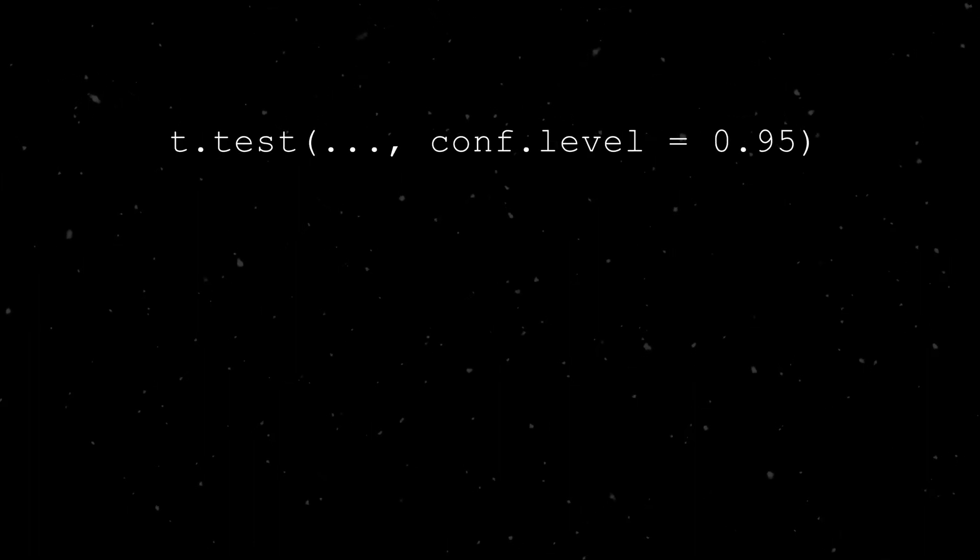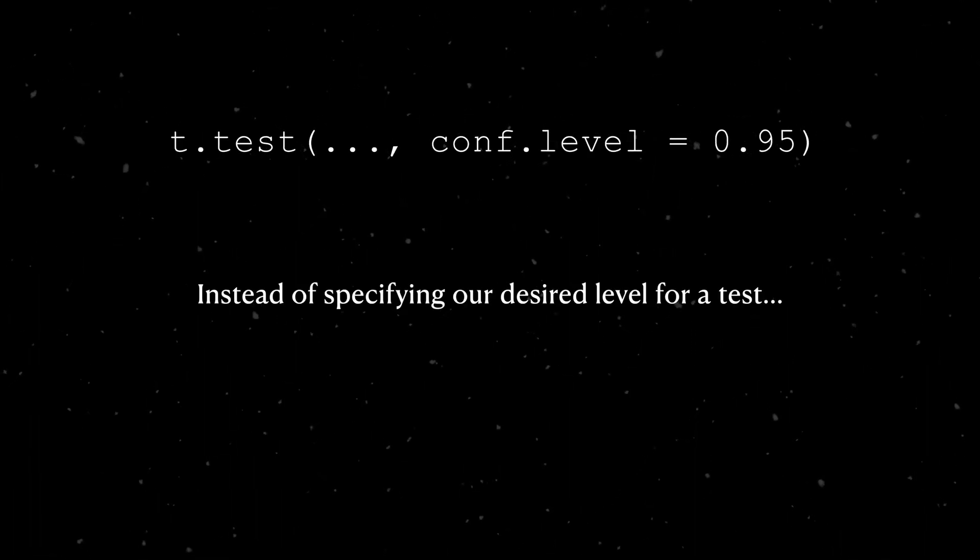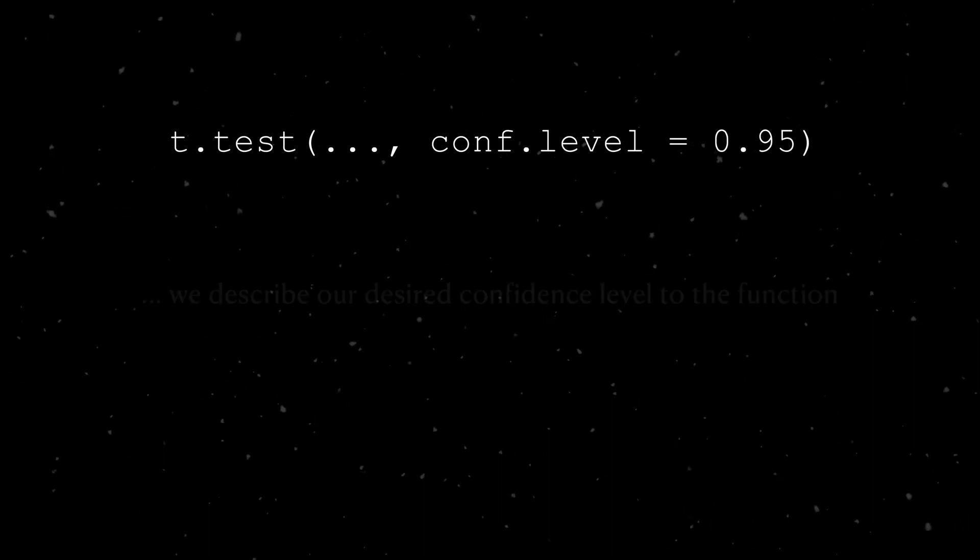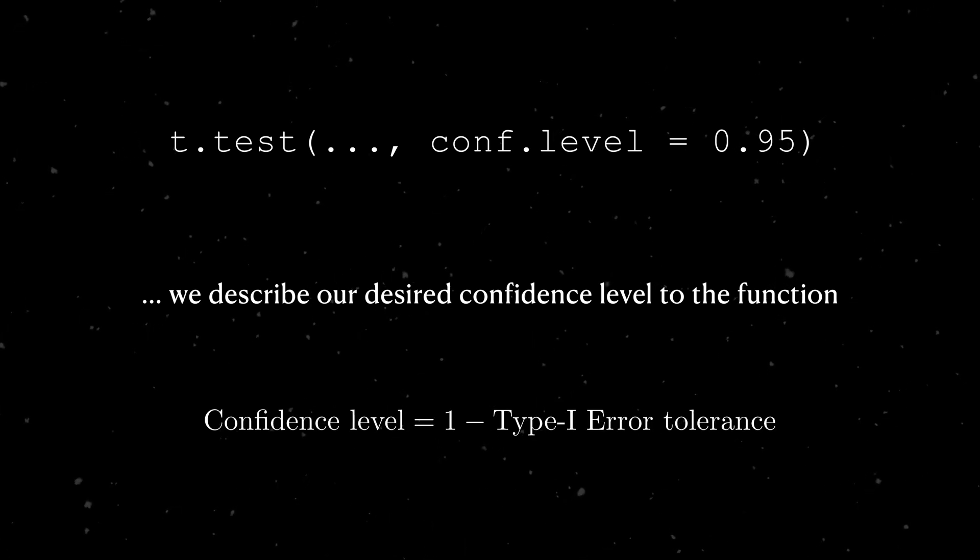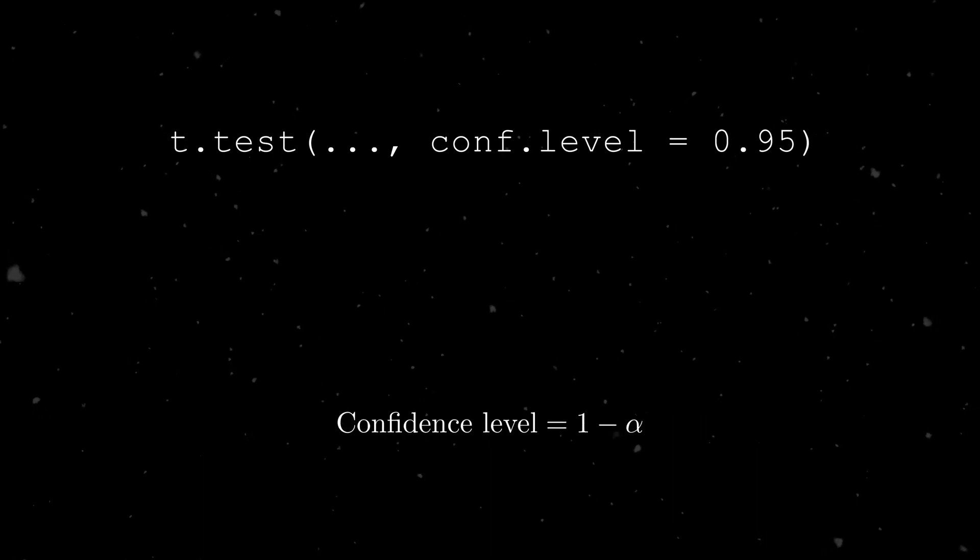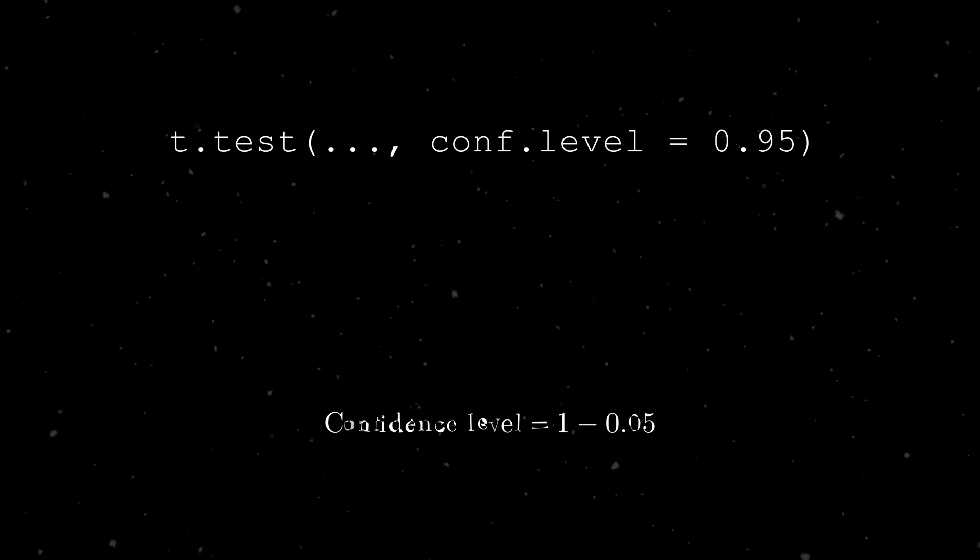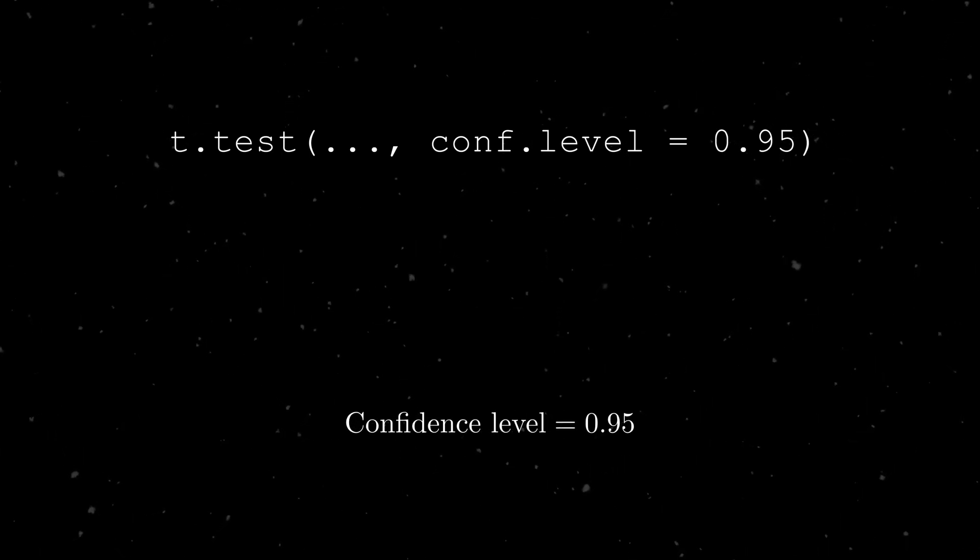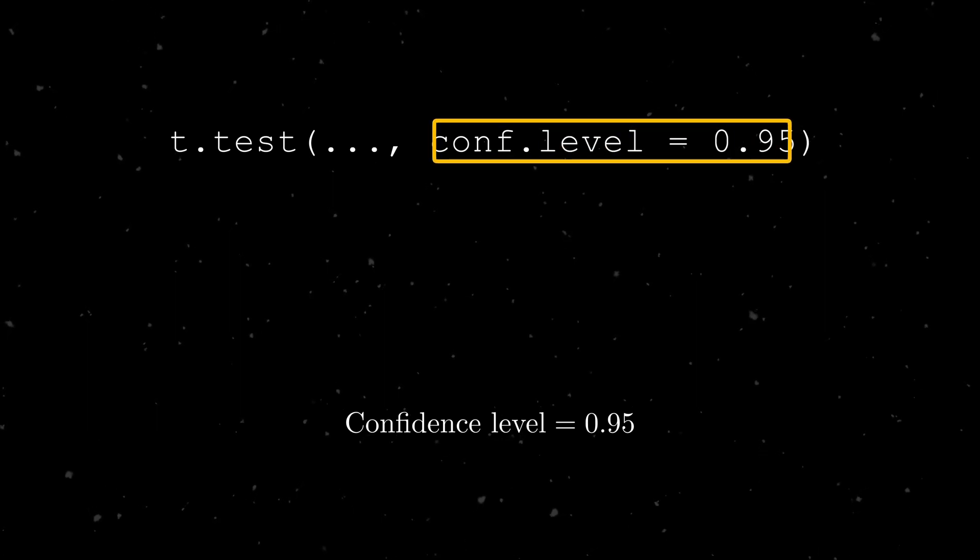And finally, there's the conf level argument. Instead of specifying our maximum tolerance for a type 1 error, or the level, we specify the confidence level. Thankfully, there's a clear relationship between the level and the confidence level. The confidence level is 1 minus our desired type 1 error tolerance. You've probably seen this denoted as 1 minus alpha, where alpha represents our desired level. If we want a 5% level, then this corresponds to a 95% confidence interval, which happens to be the default case.